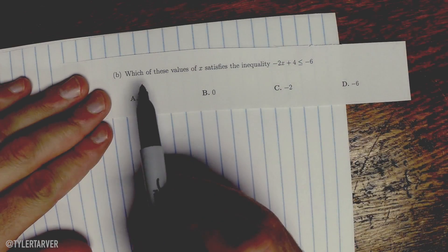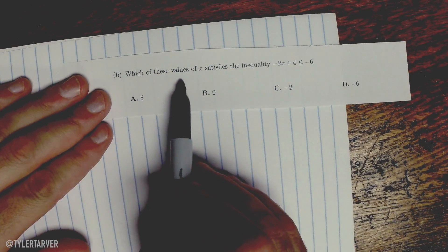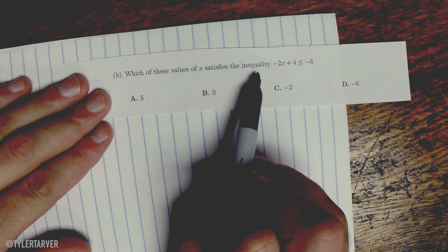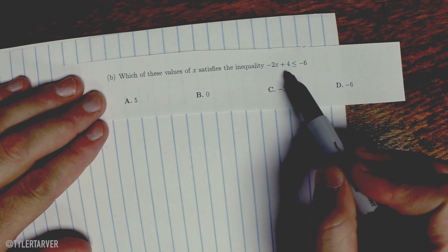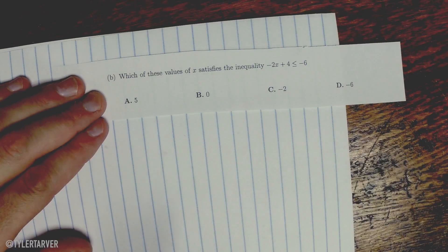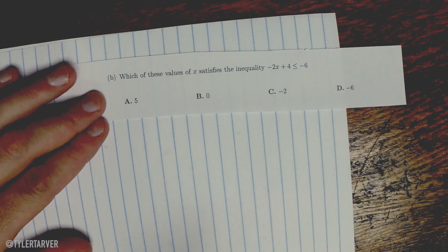Okay, so let's look at it and then you can pause it and try to work it and then we'll work it together. Which of these values of x satisfies the inequality -2x + 4 is less than or equal to -6? Okay, so pause it, try to work it, and then we'll work it together.